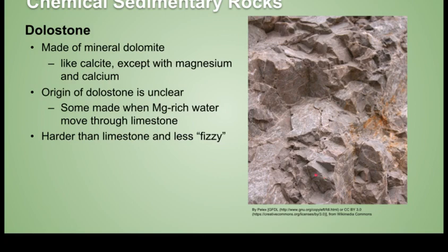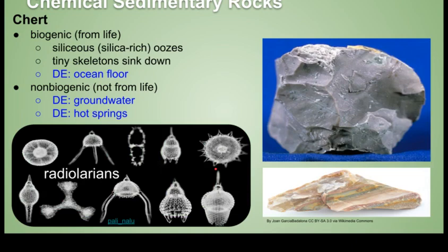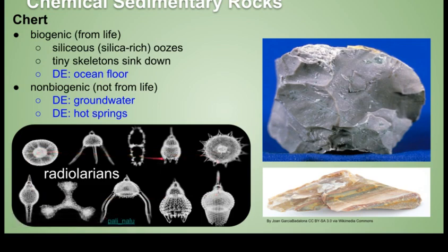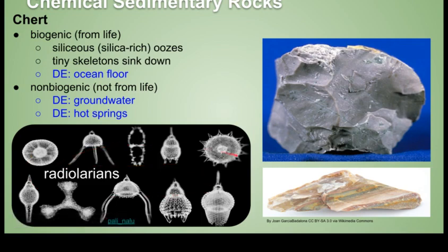Dolostone is generally harder than limestone, and it doesn't fizz as readily when you put hydrochloric acid on it. Another cool type of chemical sedimentary rock is chert, and you can have both biogenic and non-biogenic chert. Biogenic chert forms from tiny microscopic shells — this is kind of the equivalent of chalk for biogenic limestone, except these shells are made out of silica. I think these are diatoms in this picture. These accumulate at the ocean bottom beyond the zone where calcium carbonate generally can precipitate, so at fairly great depth you get siliceous oozes that pile up and then later lithify.